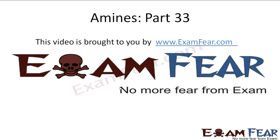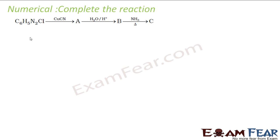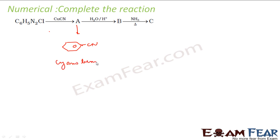This video on Amines Part 33 is brought to you by exampa.com. If you see C6H5N2Cl, this is a diazonium salt. When you add CuCN, this N2Cl will be replaced with CN, so what you get as A here is CN — that is cyanobenzene.